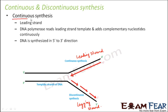Let us first talk about continuous synthesis because it is comparatively simpler. Continuous synthesis happens on the leading strand. The DNA polymerase reads the leading strand template and adds complementary nucleotides continuously, creating a new strand.